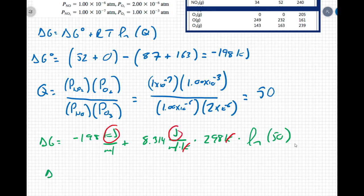So ΔG is going to equal negative 198 kilojoules per mole, plus 9,692 joules per mole. If I convert this to 9.692 kilojoules per mole, I get a final statement of negative 188 kilojoules per mole.